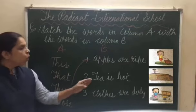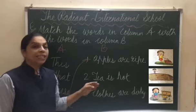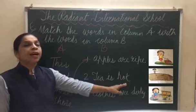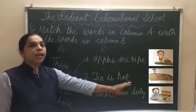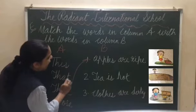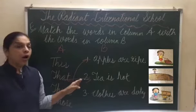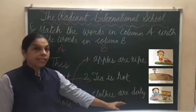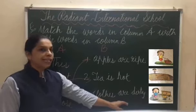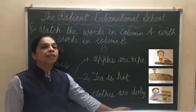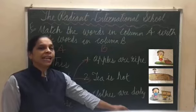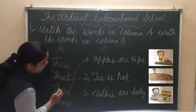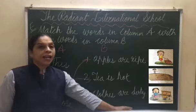Number 2: The tea is hot. In this picture, the boy is showing the tea which is hot, and that tea is a little far from him. So the sentence will be: 'That tea is hot.' Number 3: Clothes are dirty. In this picture, the girl is showing clothes which are dirty, and the clothes are near to the girl. So since they are near, it will be: 'These clothes are dirty.'